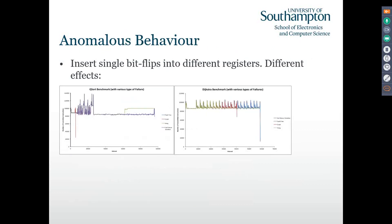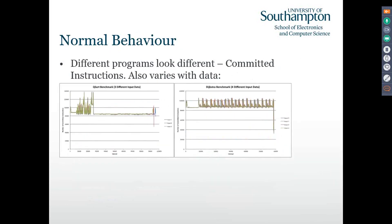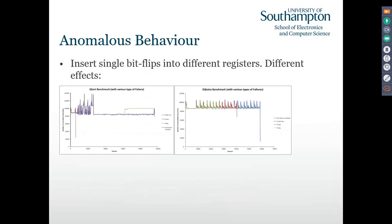What my student tried to do was insert bit flips into different registers in the processor core. You can see from the different colors that there are different effects and you get different types of failure. The same pattern that we had for that benchmark repeats, but depending on when and where the fault is injected, we get different types of behavior — suddenly we get a crash, the instruction commit rate changes, or we get a hang condition. The hypothesis is: can we detect this stuff on chip, rather than waiting for a system to crash?